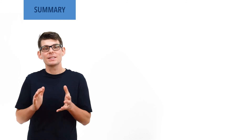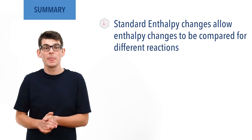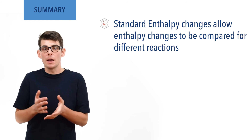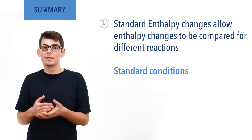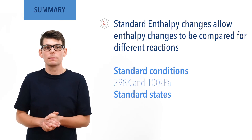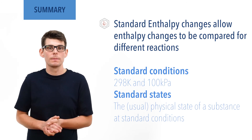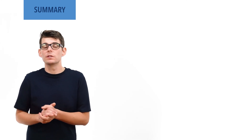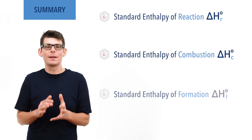So to summarize: standard enthalpy changes are used to ensure enthalpy changes can be compared for different reactions, as changes in temperature and pressure can affect enthalpy changes measured. A measured enthalpy change can be considered standard if standard conditions are used and reactants are in their standard states. Standard conditions are 298 Kelvin and 100 kilopascals. Standard states are the physical states of substances when they are at standard conditions. There are lots of different types of standard enthalpy changes; the most commonly taught at this level are standard enthalpy of reaction, standard enthalpy of combustion, and standard enthalpy of formation.